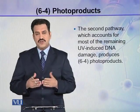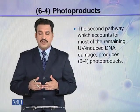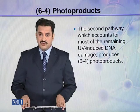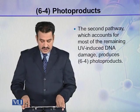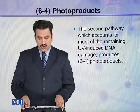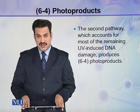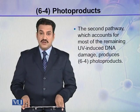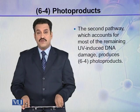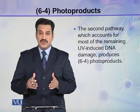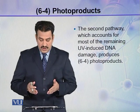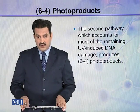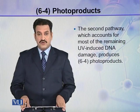The first pathway by which UV damages DNA is the formation of cyclobutane pyrimidine dimer. The second pathway, which accounts for most of the remaining UV-induced DNA damage, produces 6-4 photo products. CPD accounts for about 75% of the total UV damage to DNA, while the remaining 25% is contributed by the 6-4 photo product pathway.